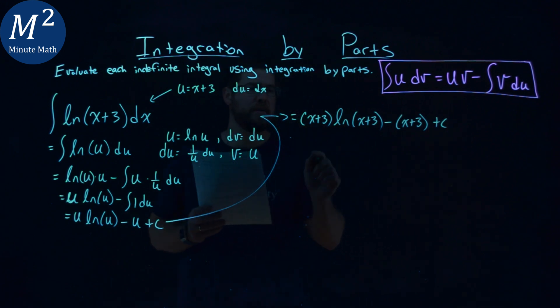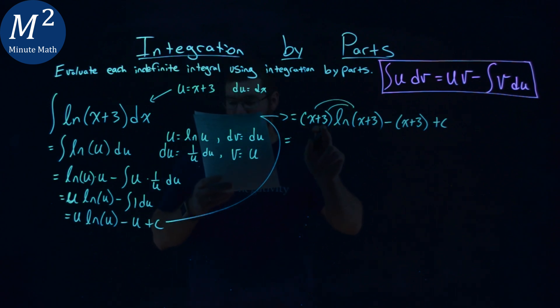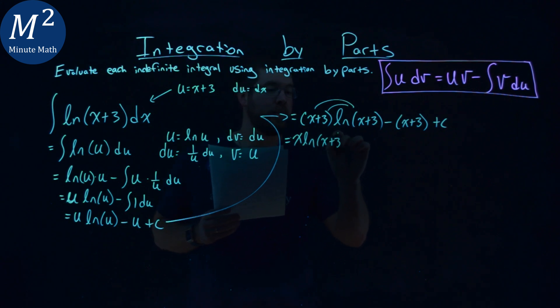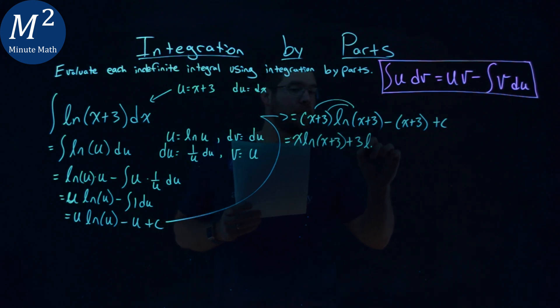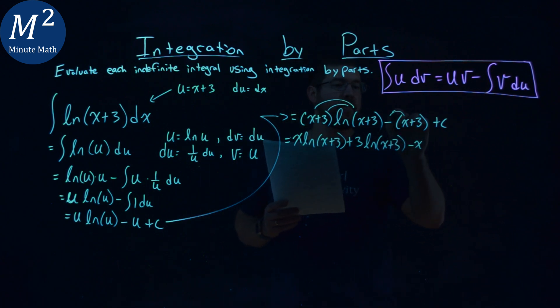Now I'm going to do some simplification here. I'm going to multiply this natural log of x plus 3 to both parts here of the x plus 3. So I have x natural log of x plus 3 plus 3 natural log of x plus 3. Then we have minus x, distribute this out, minus 3 plus c.